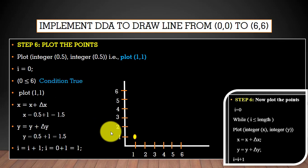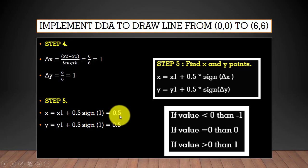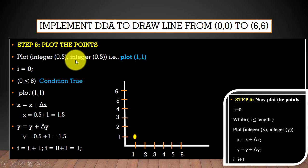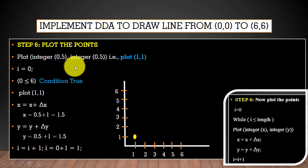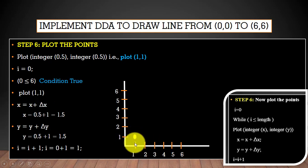Now we will plot the first point. According to step 5, we have the point (x, y) = (0.5, 0.5). We round this to the integer point (1, 1). To plot it, we check the condition: i = 0, and 0 is less than 6, so the condition is true. We then plot point (1, 1) on the screen.